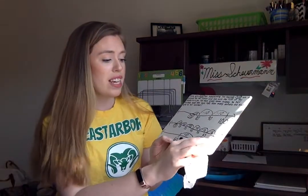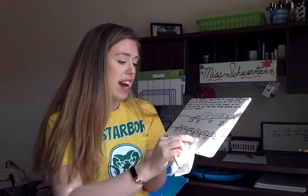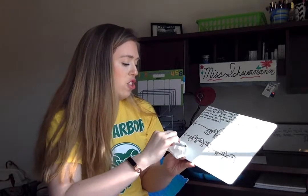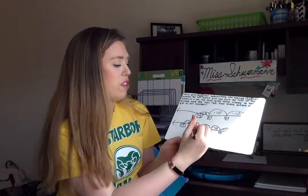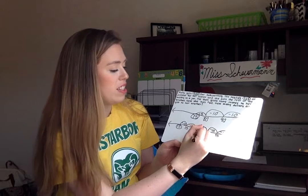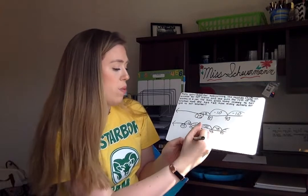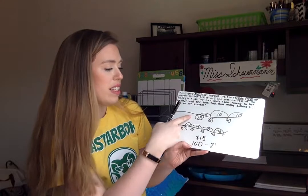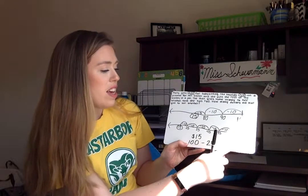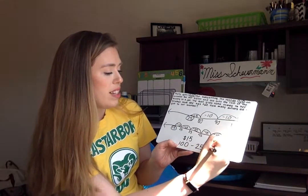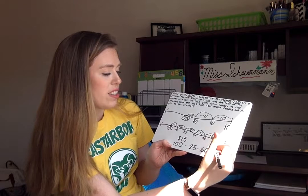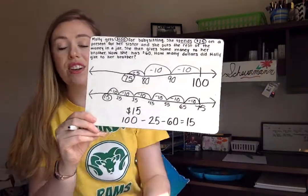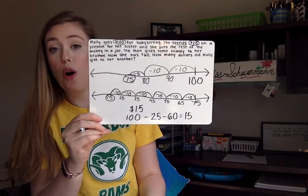Either way, she would have given $15 to her brother. The same equation: we had 100, subtracted out 25 to get to 75, then from 75 we took away $60 to get to that 15. So here is method number two with our open number lines.